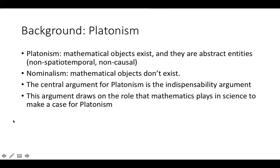I'm going to draw the distinction between Platonism and Nominalism. Mathematical Platonism is the view that mathematical objects exist and that they're abstract objects. Nominalists deny the existence of mathematical objects — there are lots of ways to be a nominalist, but they're all united in their dislike for the ontological commitment that Platonism has. The central argument for Platonism over the last 30 years or so has been the indispensability argument.